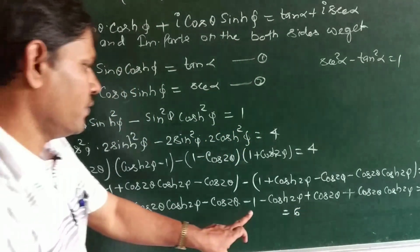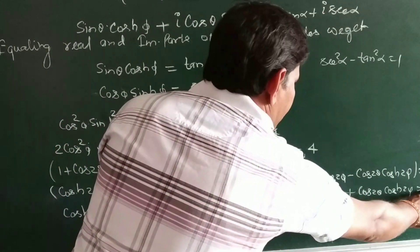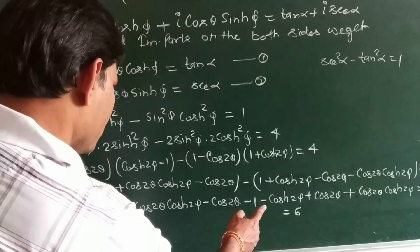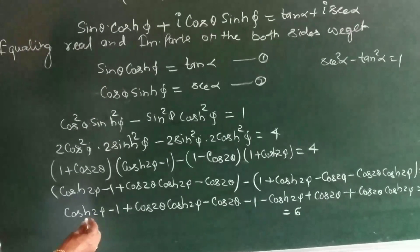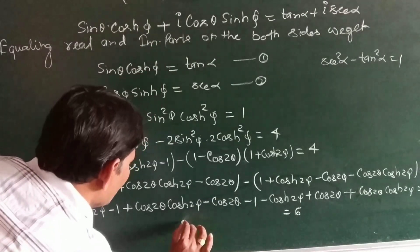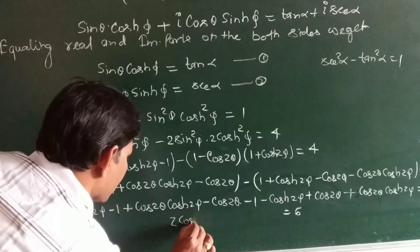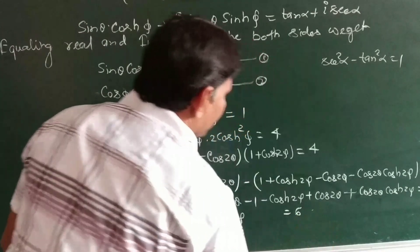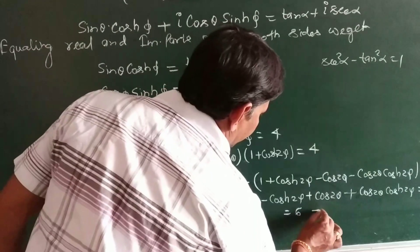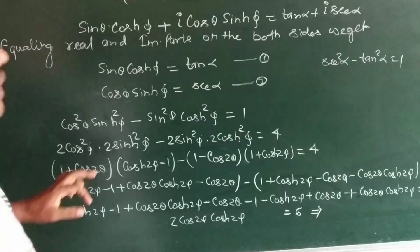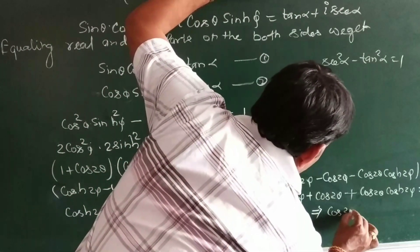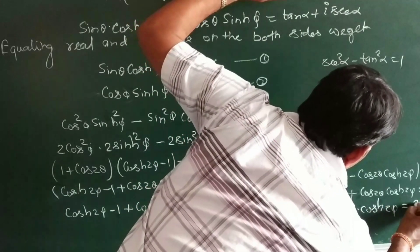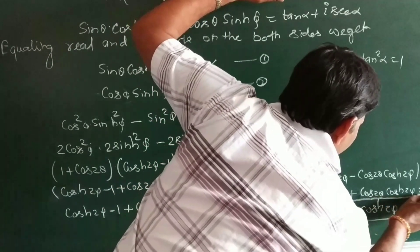Focusing on the result: 2·cos(2θ)·cosh(2φ) is equal to 6. Finally, the result is cos(2θ)·cosh(2φ) is equal to 3. Proof complete.